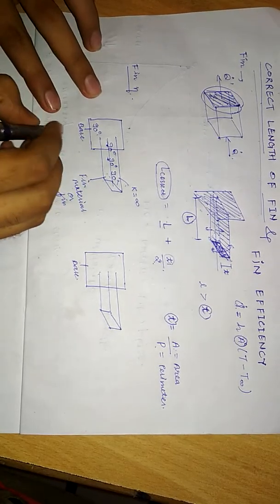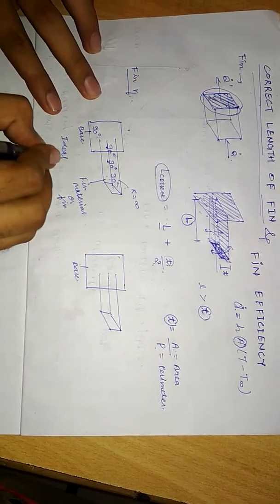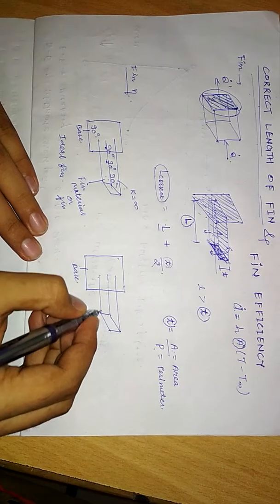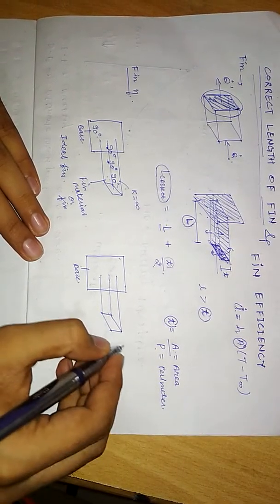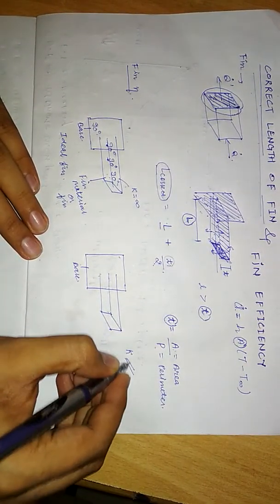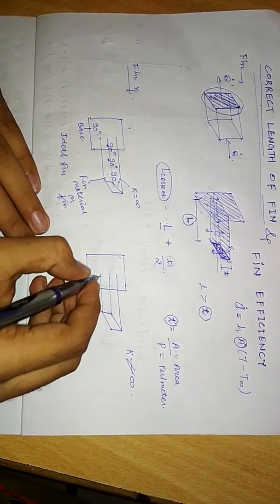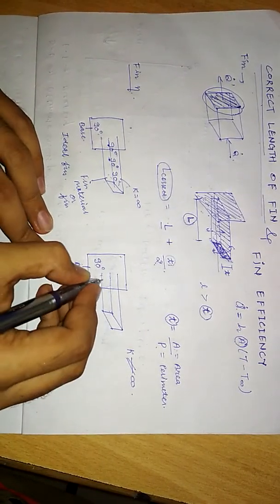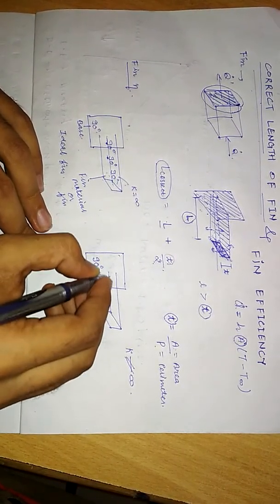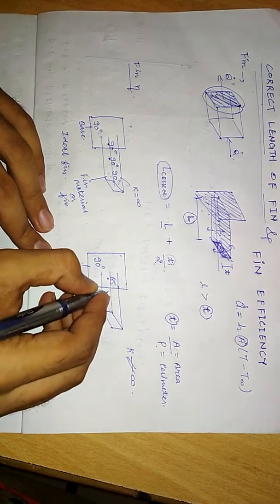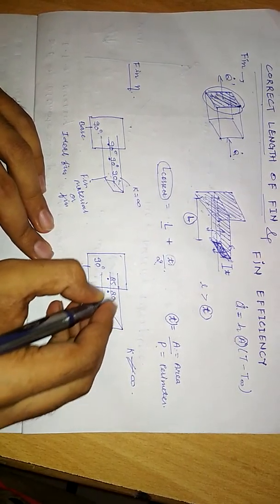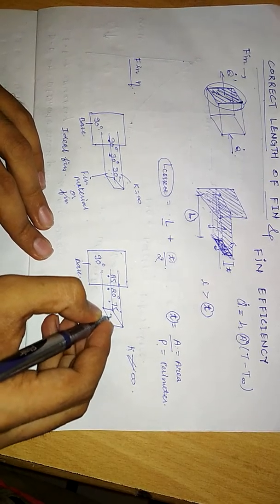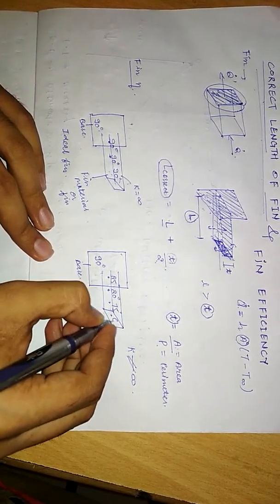This is the ideal fin case. Now suppose the fin material does not have infinite conductivity. If the base temperature is 90°C, then at a point further along it may be 85°, further still 80°, then 75°, and at the tip it might be 60°. So there is a temperature gradient along the length of the fin in the actual case.